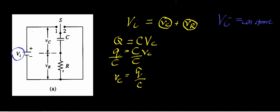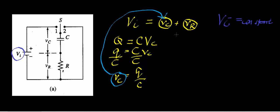We can take that value and substitute it in later. When we charge the capacitor, the instantaneous voltage across the capacitor increases. But if the input voltage is constant, that means the voltage across the resistor has to decrease. Let's calculate what the instantaneous voltage across the resistor would be.